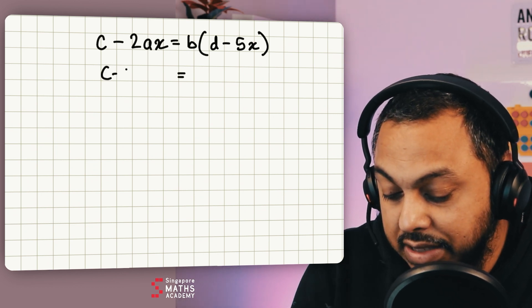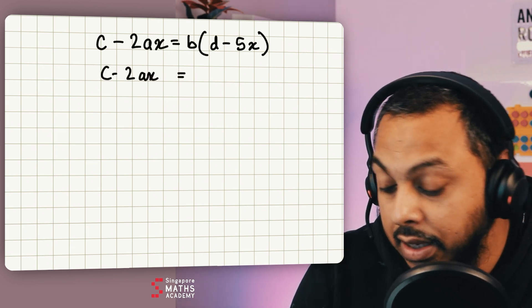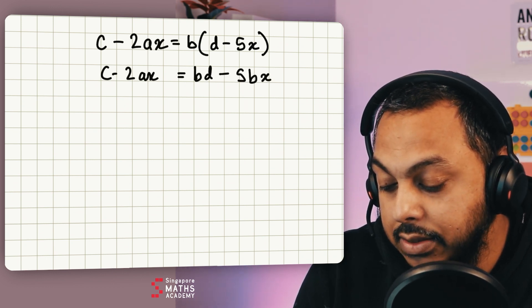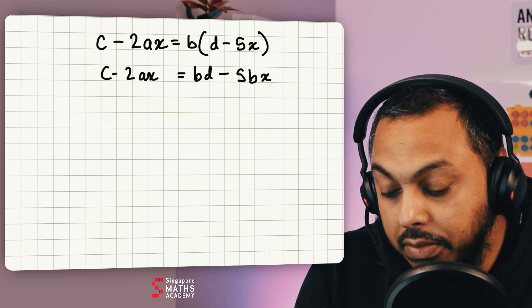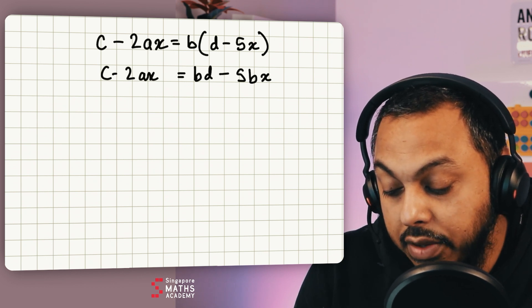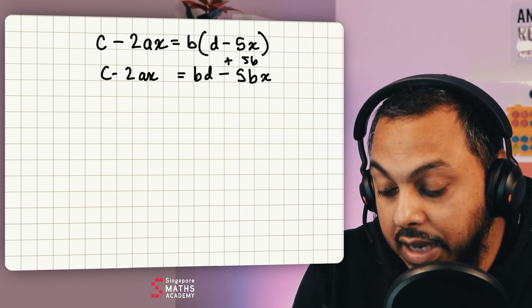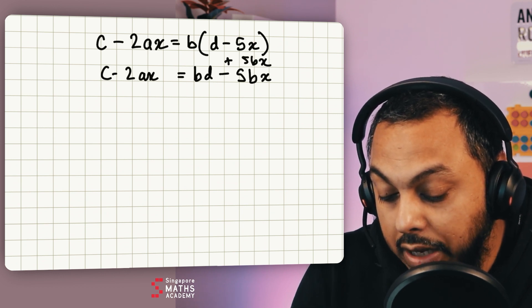So the way we would do that is first I would need to expand. So this stays the same c take away 2ax and you've got bd take away 5bx. And so now I can move the 5bx over to the left hand side so I add 5bx.